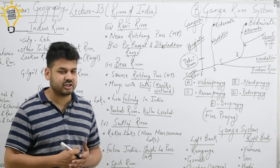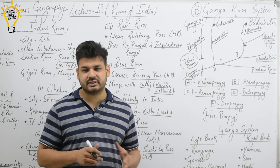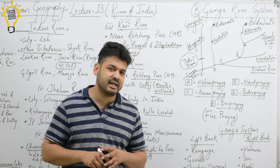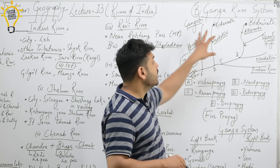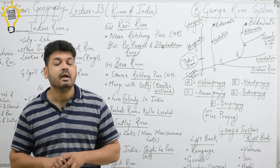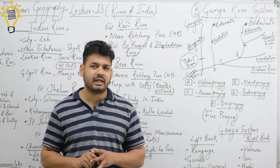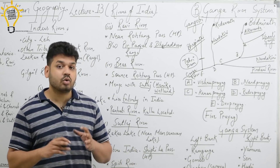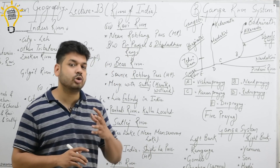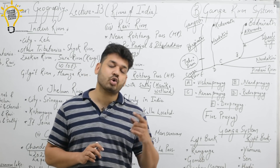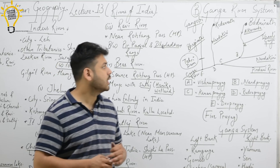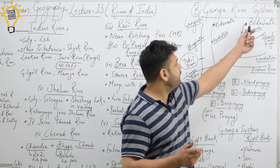That completes the Indus River System. Next is the Ganga River System. The Ganga River System includes 5 important Prayags. These Prayags are places where rivers meet, and their names are very important for exams.